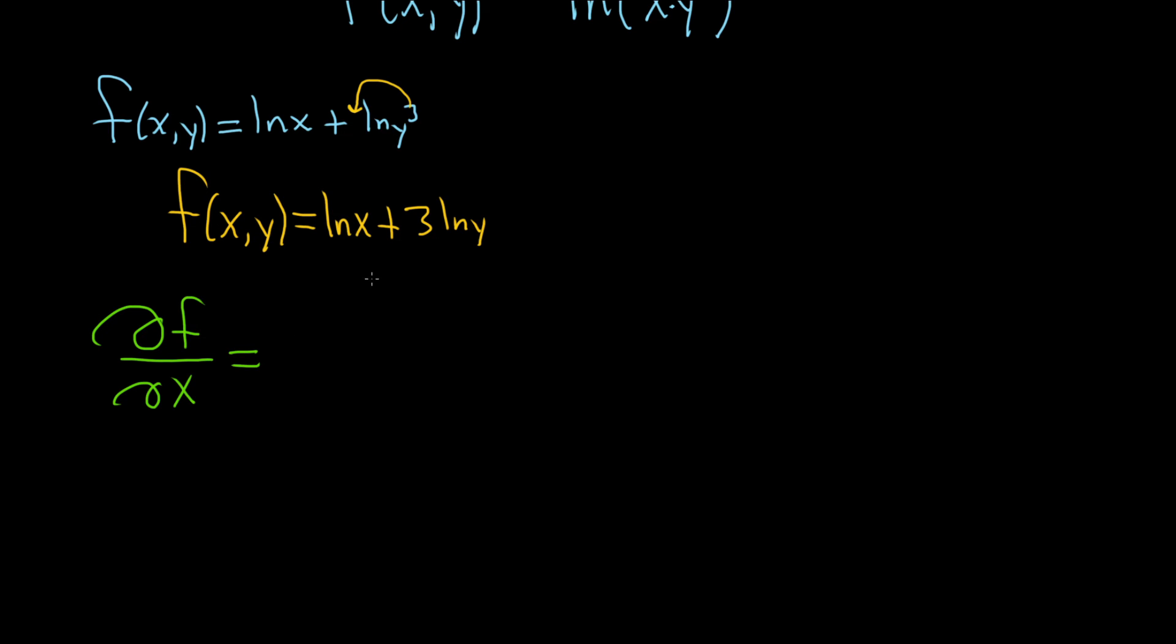So here, we take the derivative. We simply take the derivative of ln x, and that's 1 over x, and this derivative here would be 0, so plus 0. So we just end up with 1 over x. And so that would be the partial derivative of f with respect to x.